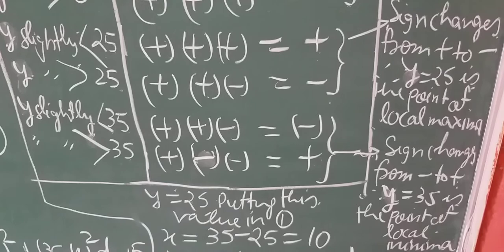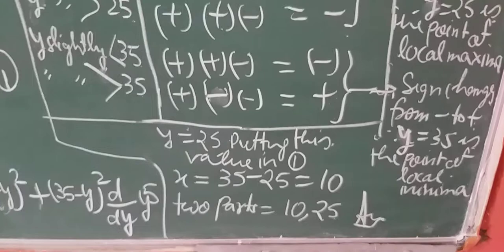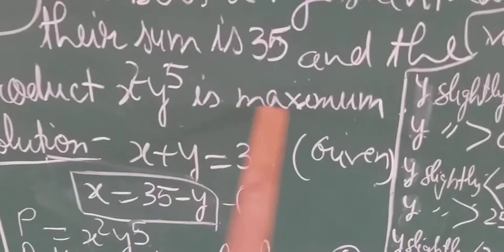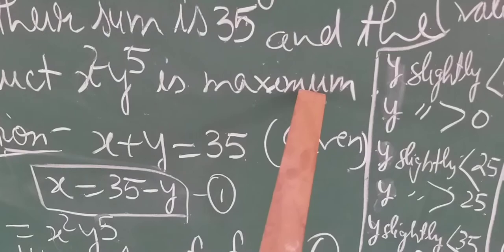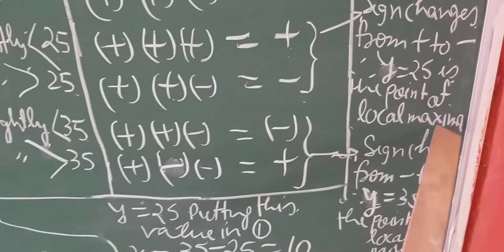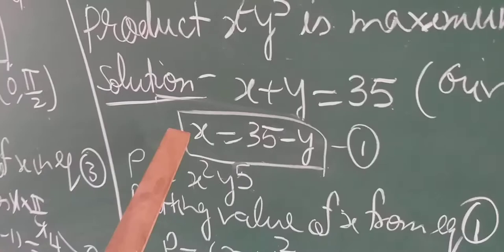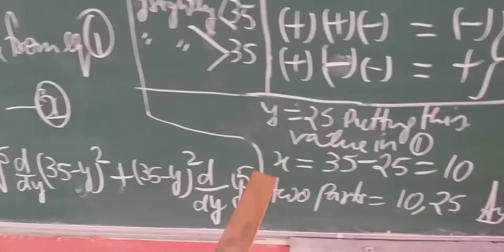The question asks for the product to be maximum, so we use y = 25 (the point of local maxima). Substituting y = 25 into equation 1: x = 35 − 25 = 10. Therefore the two positive numbers are x = 10 and y = 25.